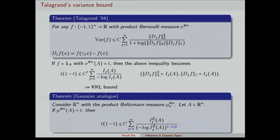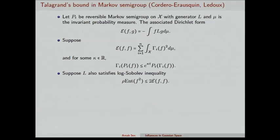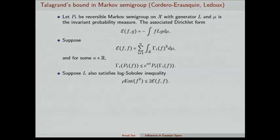Now let me leave this Gaussian framework and talk about the general abstract Markov semigroup setting. Subsequently, Cordero-Erausquin and Michel Ledoux saw our paper and realized that many things can be generalized in the Markov semigroup setting. The setting is: suppose you have a reversible Markov semigroup with generator L, μ is your invariant probability measure, and you have the Dirichlet form. There are three conditions. First, you assume there are operators Γ_i — think of them as derivative operators — such that the Dirichlet form can be decomposed in a certain way.